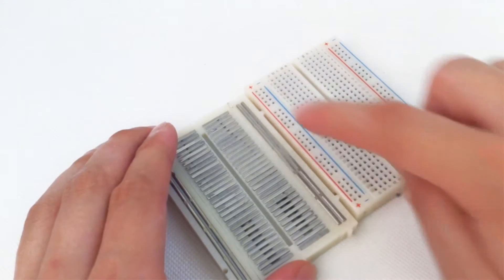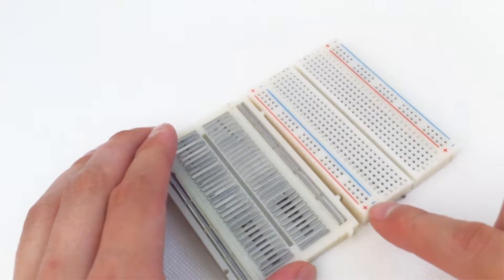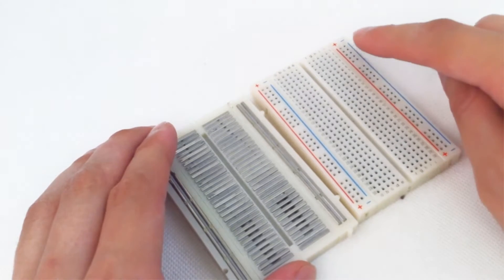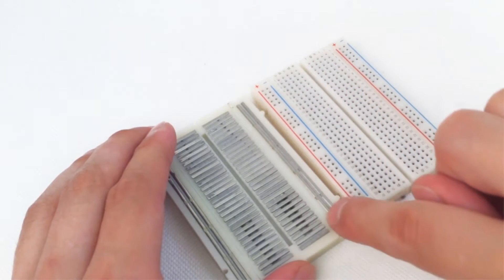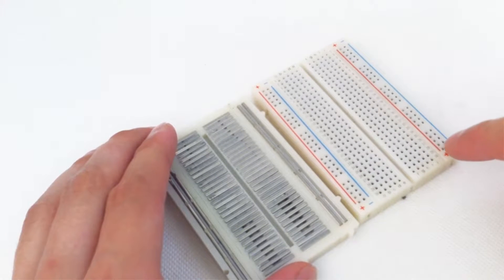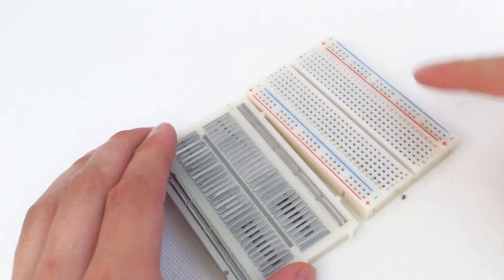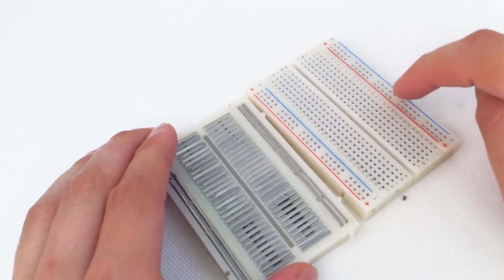Now these lines are known as the power rails which you might be able to guess from the positive and negative side. Now they conduct electricity across the entire length which means we can put the power supply or any other component in one end and it will be electrically connected with whatever's in any of these holes.